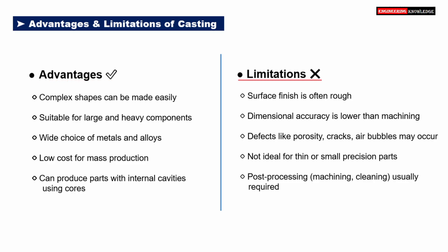Limitations of casting: surface finish is often rough, requiring additional finishing work. Dimensional accuracy is generally lower than that of machining. Defects such as porosity, cracks, and air bubbles may occur during the process. It's not ideal for thin or small precision parts where tight tolerances are critical. Post-processing like machining or cleaning is usually necessary to achieve the final shape and finish. Casting is highly efficient for producing large and complex components, especially in bulk. However, it may require post-processing and may not be suitable for precision applications.